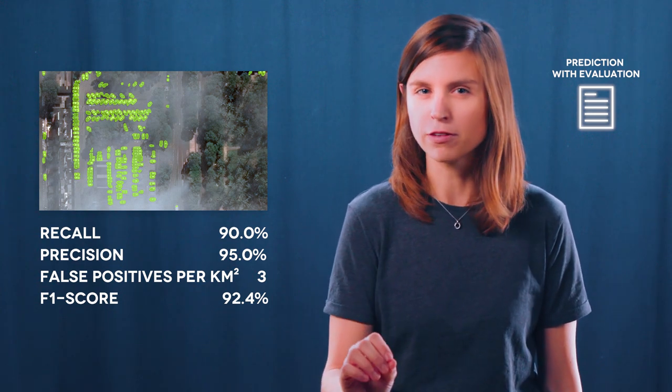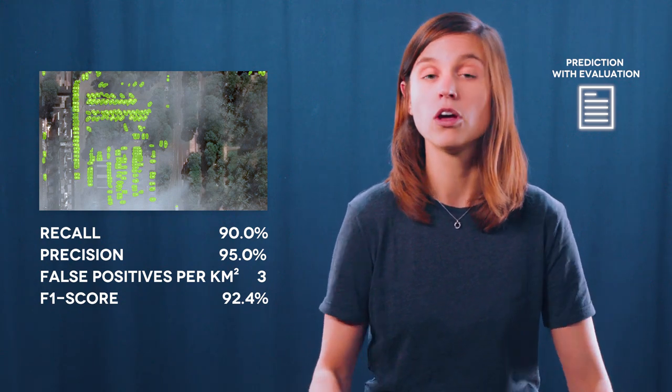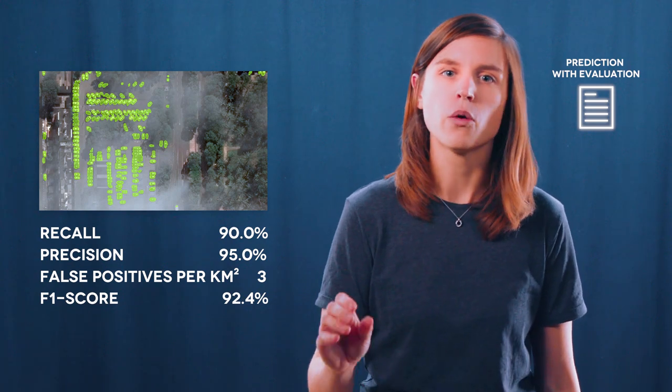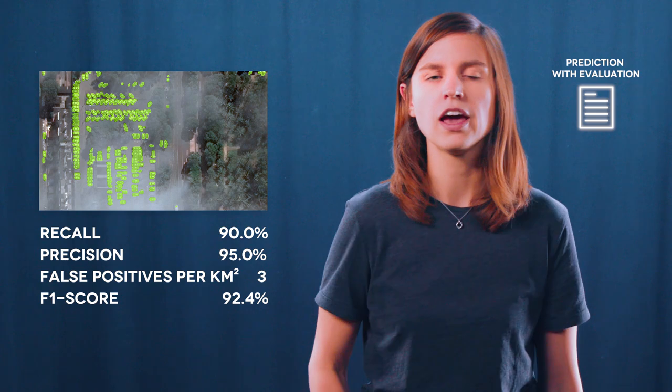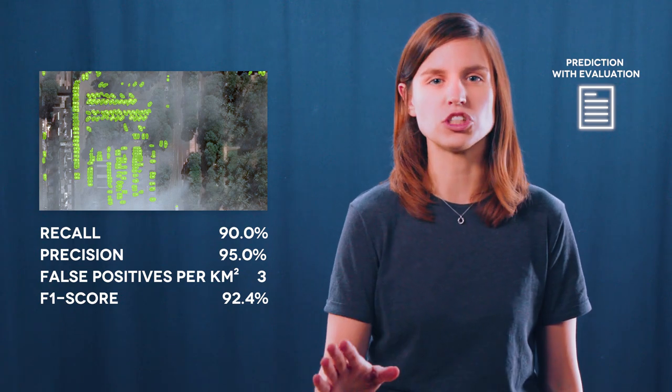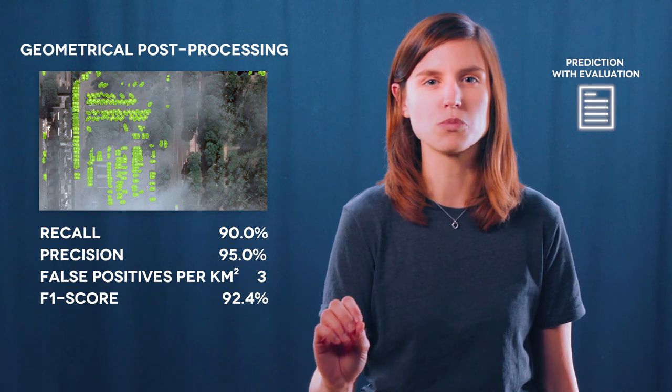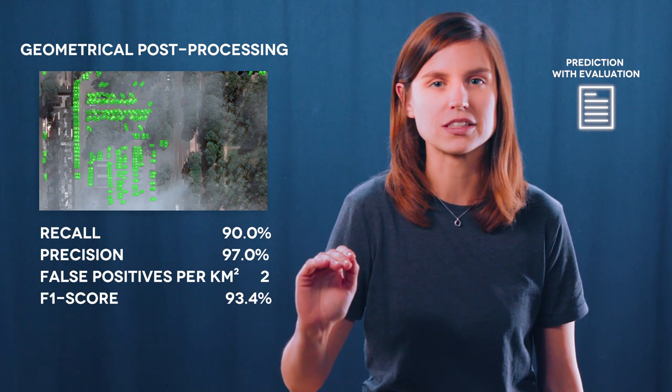Once you do, you may think that you have done your best and that your metrics can't get any better. Good news, that's not entirely true. In our team, we like using some simple but super efficient tricks. Here they are. Thanks to geometrical post-processing, detections that are obviously too small to be vehicles can be removed. There, your precision just rose a bit.